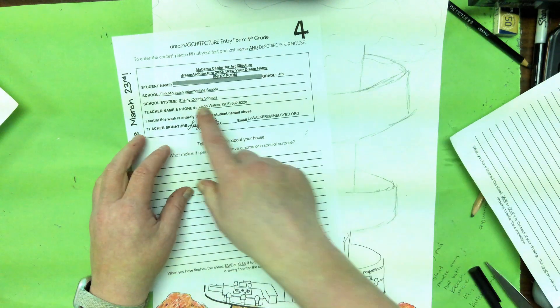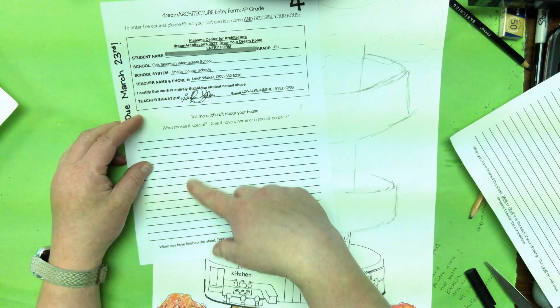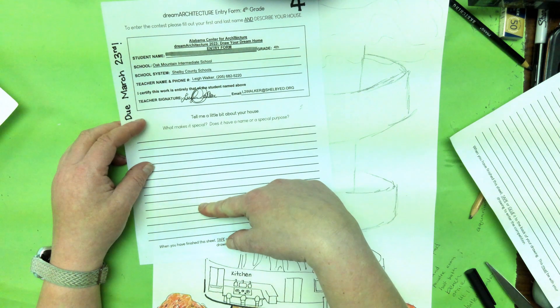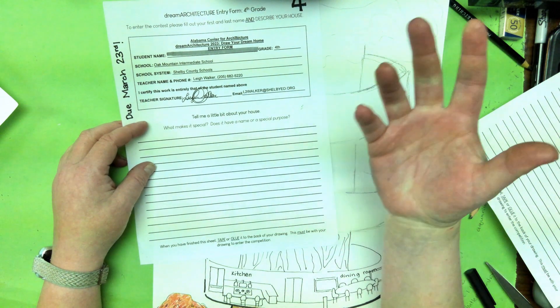All you have to do is write your first and last name, where we can read it. And then you're going to write just a little bit about your house to tell us, yeah, here's where my house is special.